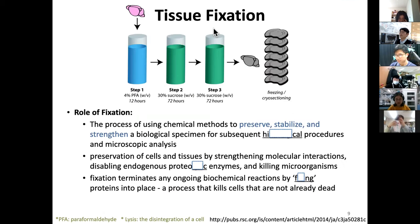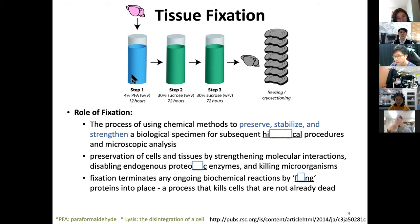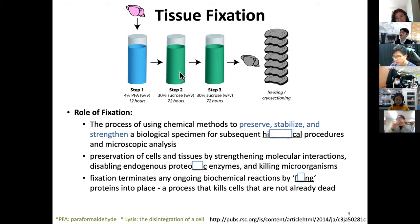Let's go back step by step about fixation. After perfusion fixation, you put the brain in 4% paraformaldehyde overnight — about 12 hours. The next morning, you soak it in 30% sucrose solution — this is sugar — sometimes twice. Why? Because during freezing, the tissue structure can easily crystallize and break. Sucrose immersion prevents that by acting as a cryoprotectant.